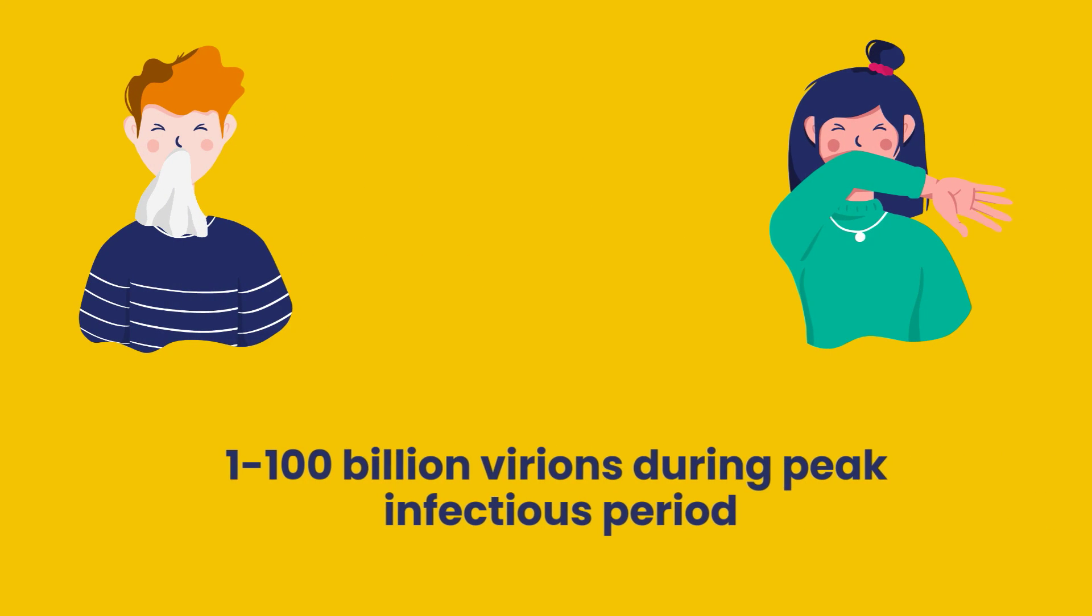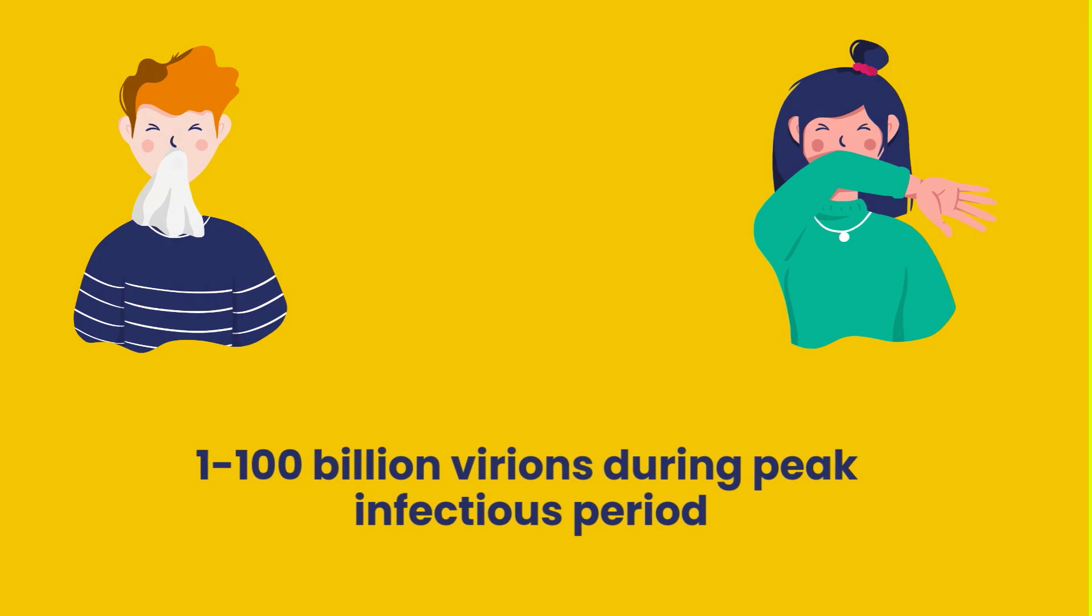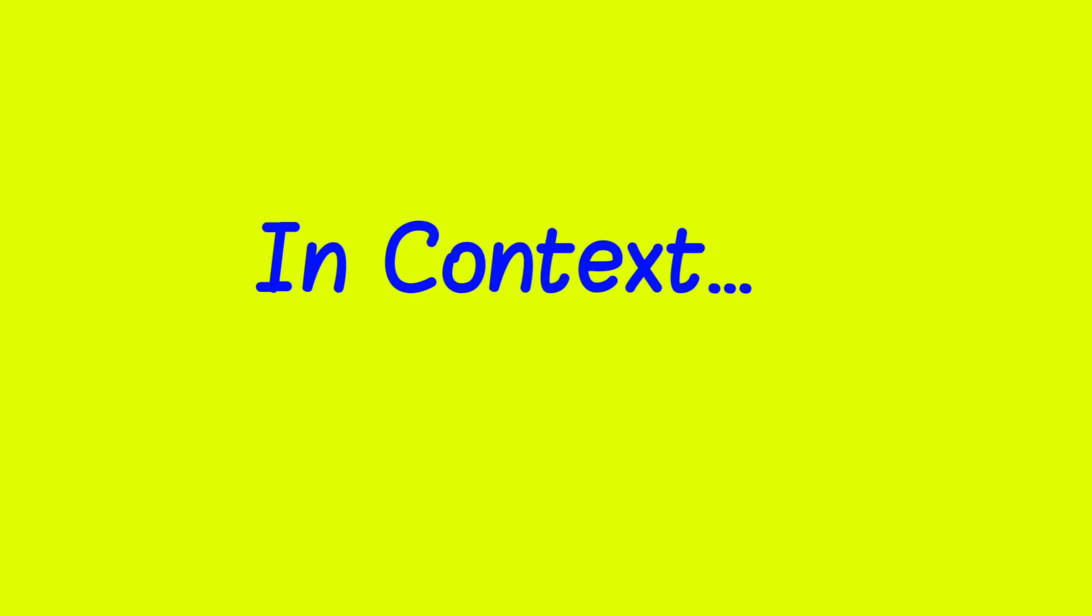Now, is there any other way that we can make sense of this number? Well, yes there is. It is indeed estimated that each infected person with coronavirus carries 1 to 100 billion variants during peak infection, which equates to a total mass of 1 to 100 microgram. And if we contextualize this figure, it amounts to be 100 times less than the mass of a poppy seed.